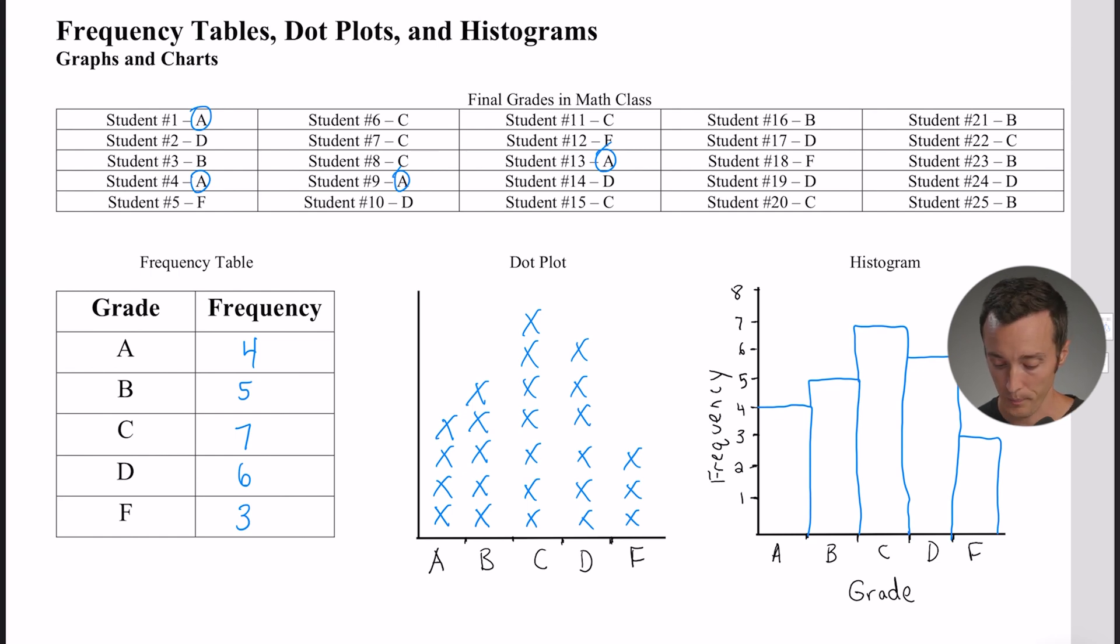Okay, so we turned it into a bar graph, but specifically it's a histogram because once again the bars are equal width and they're touching each other. So if you wanted to talk about this class's final grades in that math class, you could use a frequency table, you could use a dot plot, or you could use a histogram. It's just three different ways to display the same type of information.